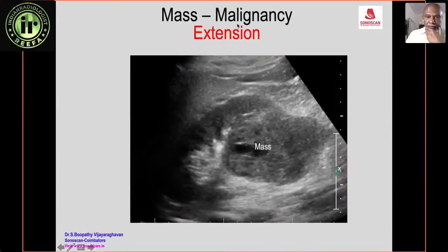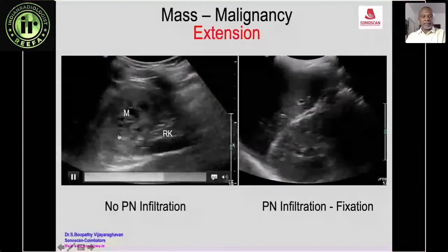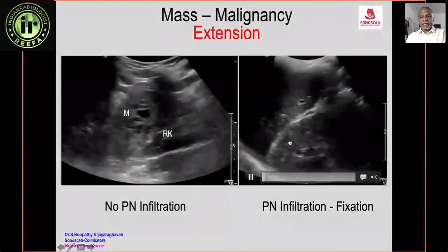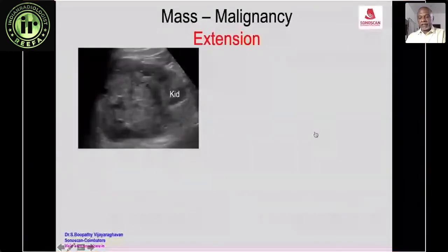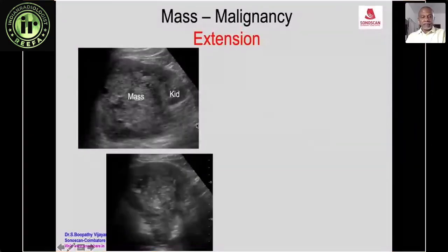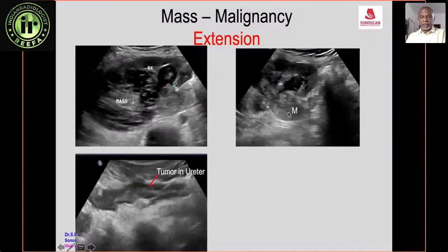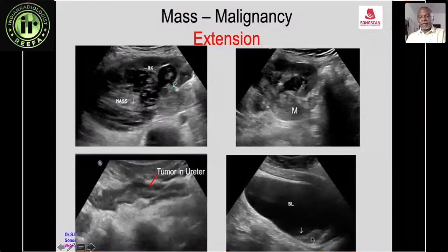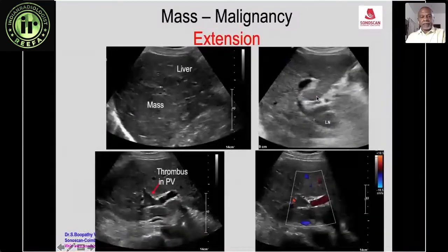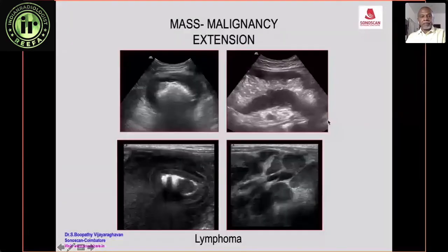Once a malignant mass is diagnosed, extension must be assessed. Renal carcinoma: breach of the perinephric fat line indicates perinephric infiltration; fixed kidney (liver moves but kidney does not) confirms it. Renal cell carcinoma can show renal vein infiltration and thrombosis with extension into the IVC on color Doppler. Extension along the ureter to the bladder can also be mapped. A renal cell carcinoma may have distant hepatic metastasis. Hepatocellular carcinoma can infiltrate the portal vein with thrombosis and produce metastatic porta hepatis lymph nodes. Lymphoma can involve both the bowel and lymph nodes.